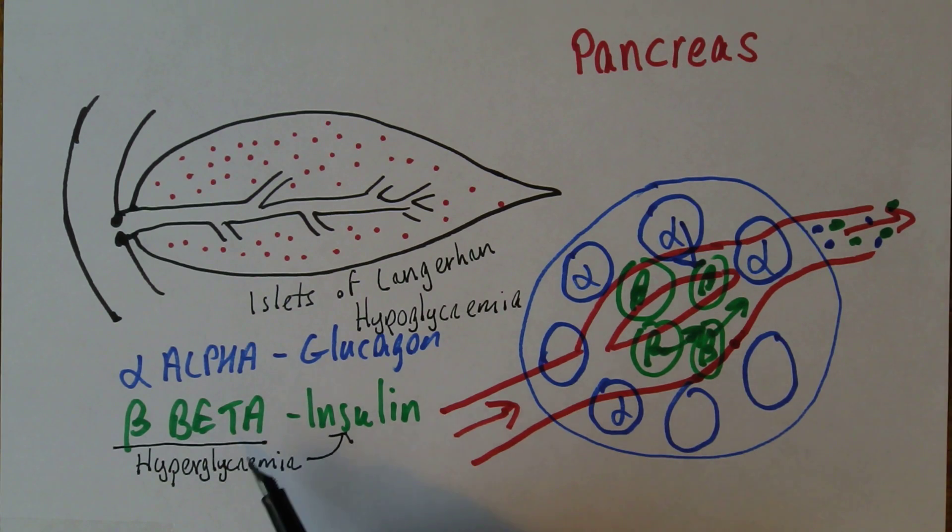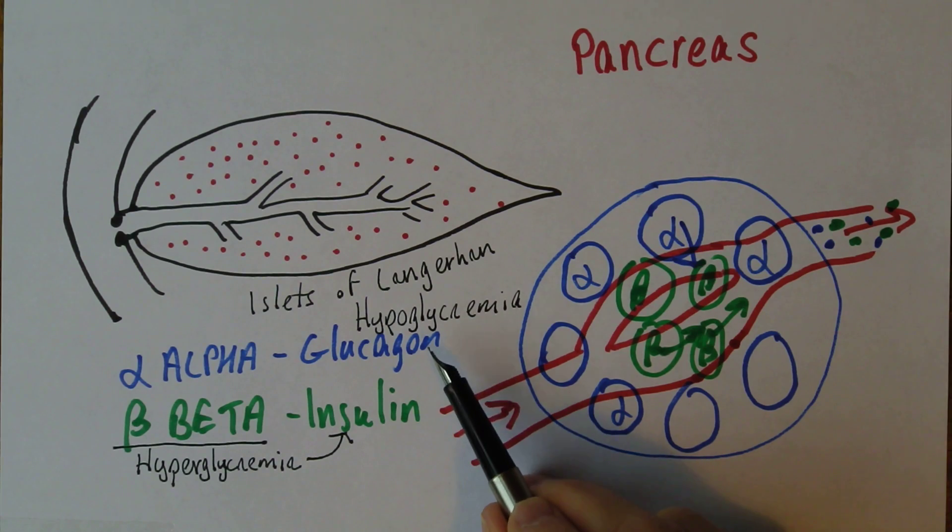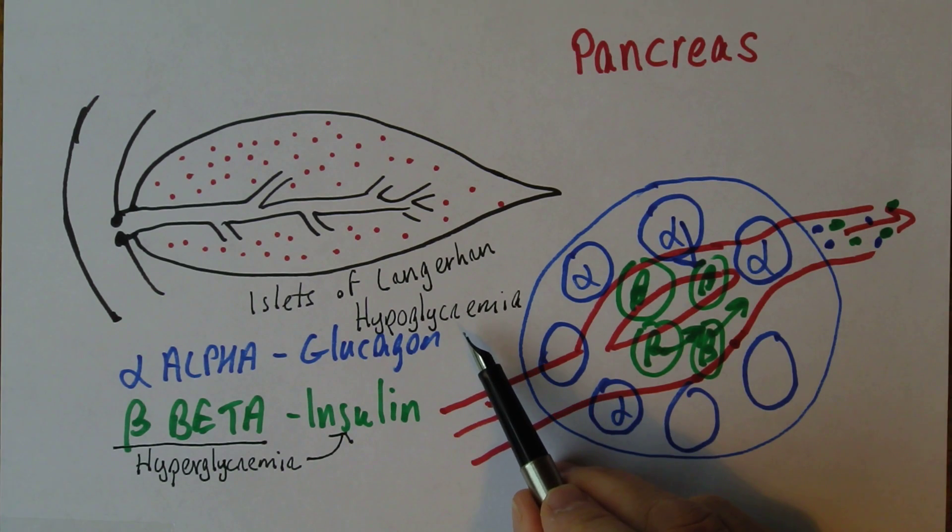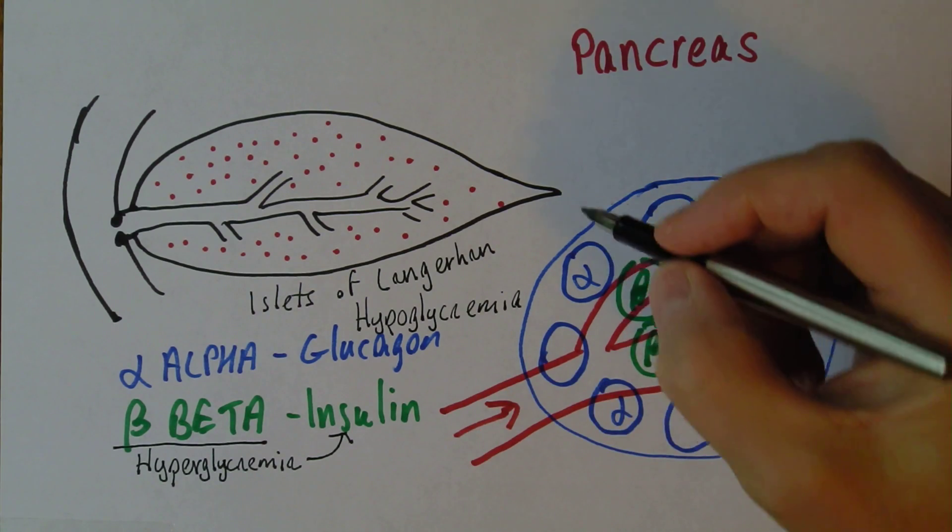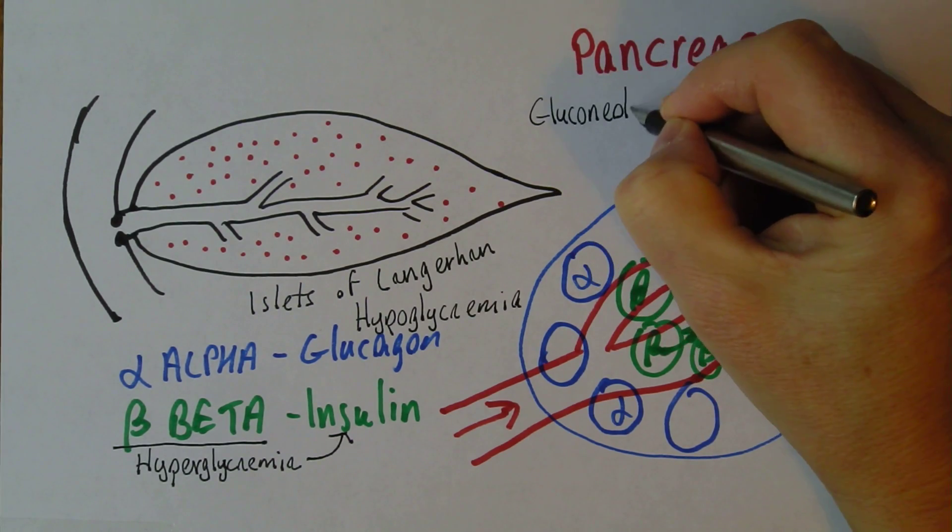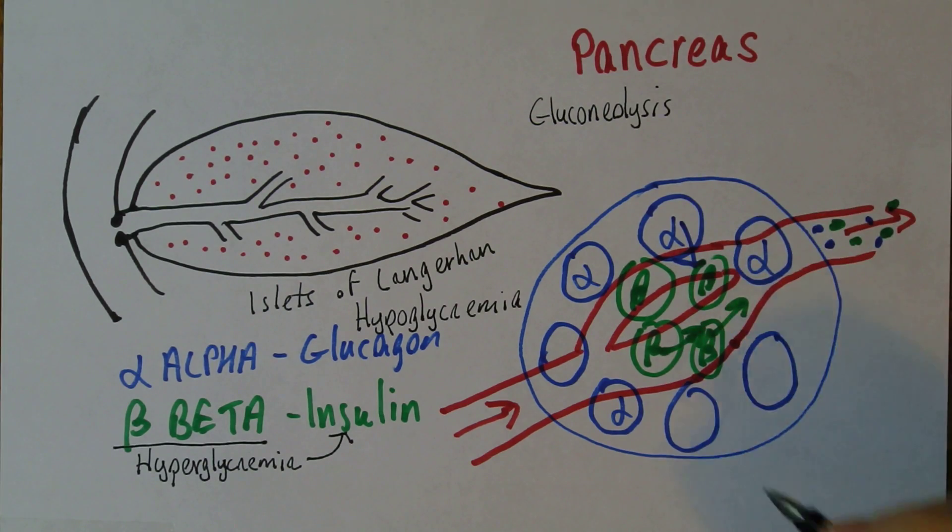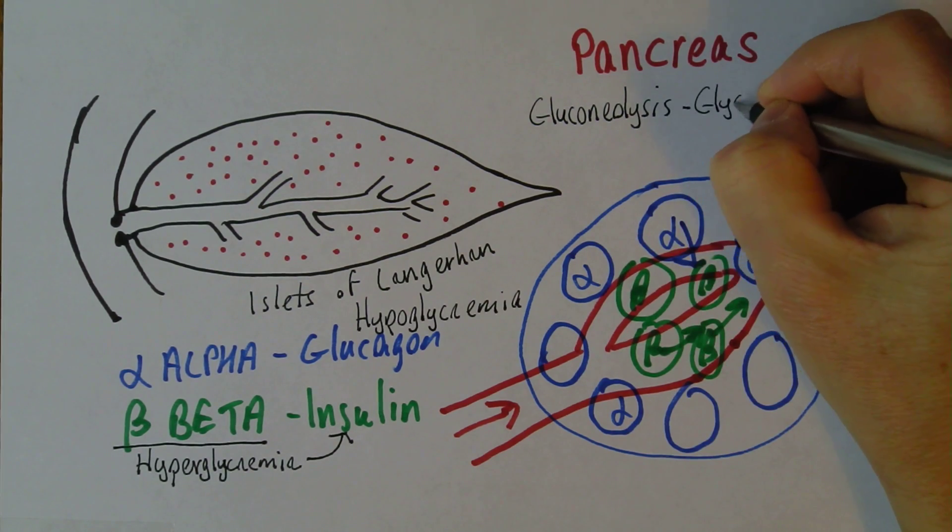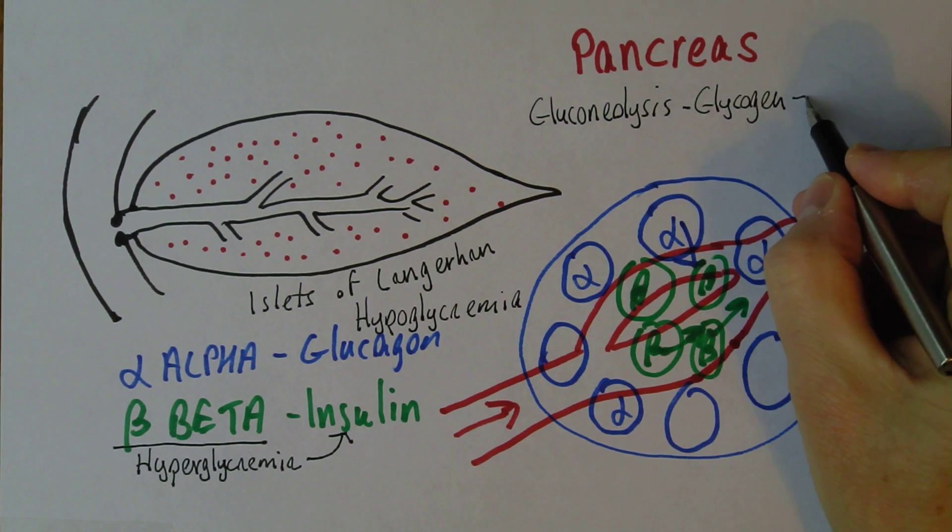So remember, the beta cells are activated by high blood sugar levels and produce insulin to lower blood sugar levels. The alpha cells are stimulated by low blood sugar levels and release glucagon to increase blood sugar levels. So the glucagon will convert the stored glycogen back into glucose. That process is called glycogenolysis.